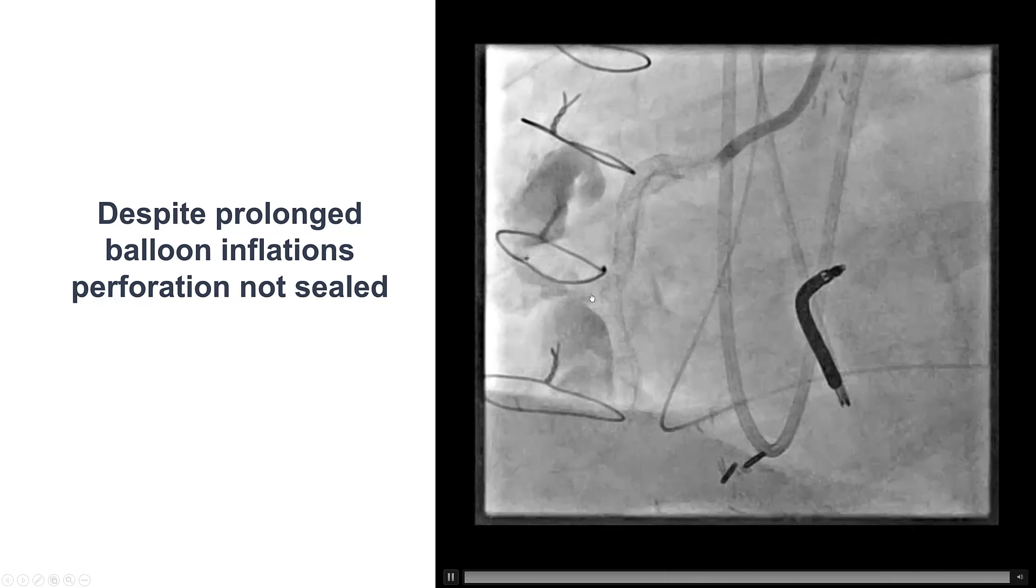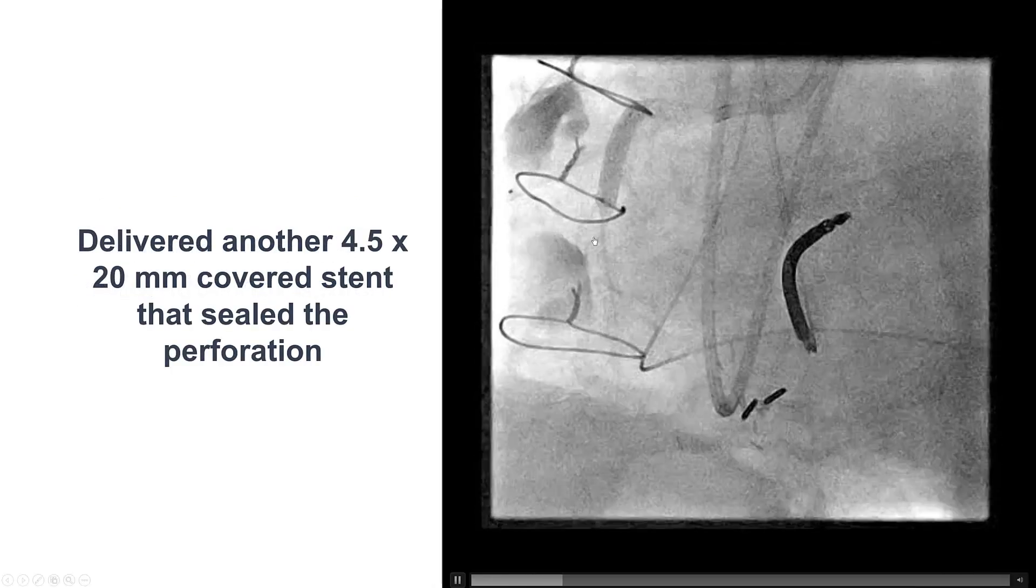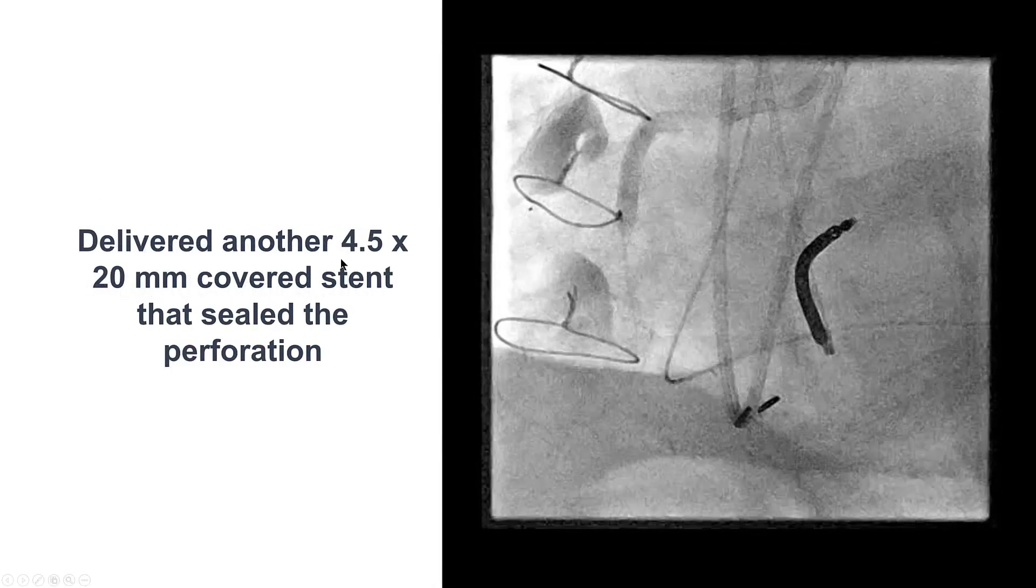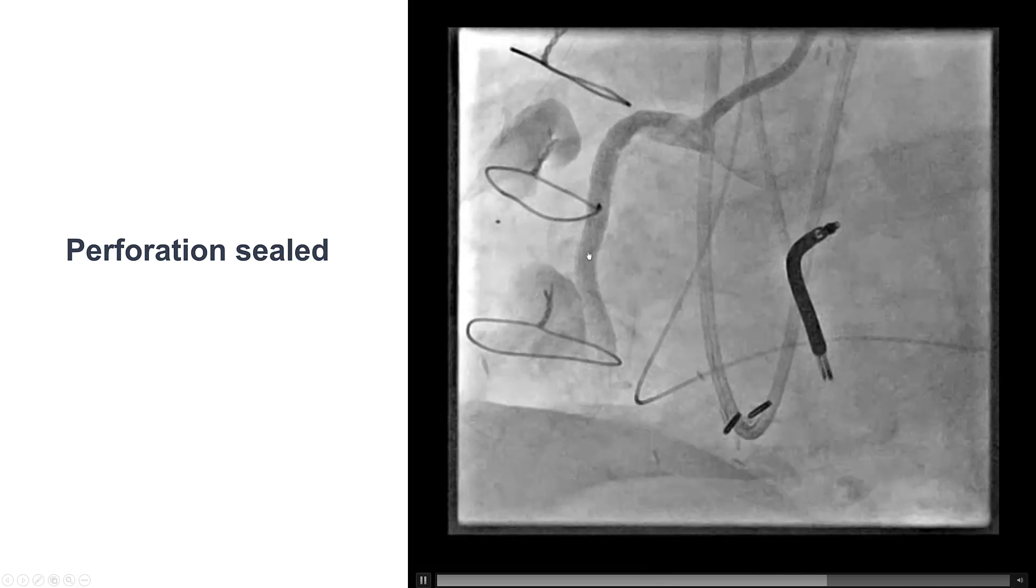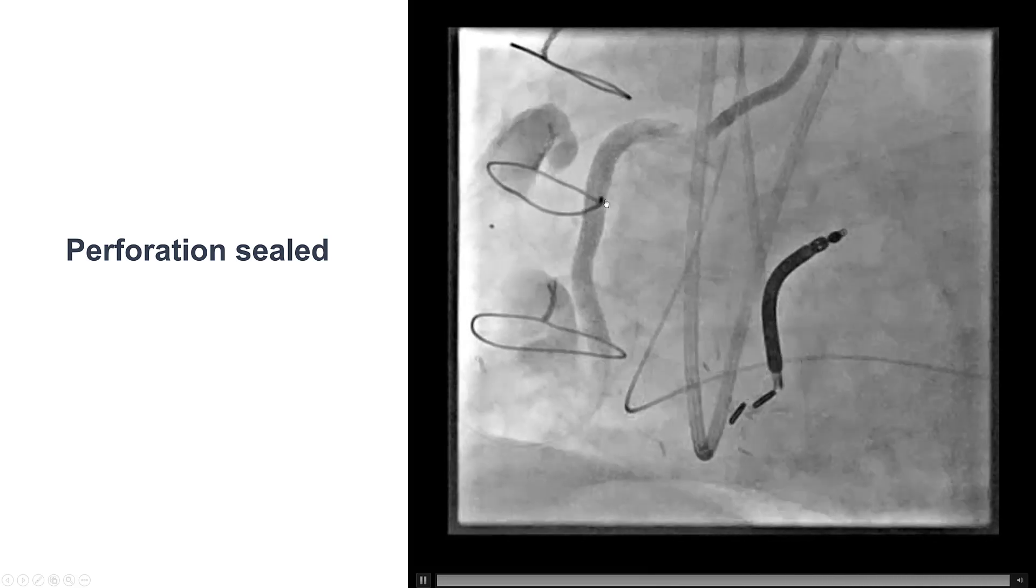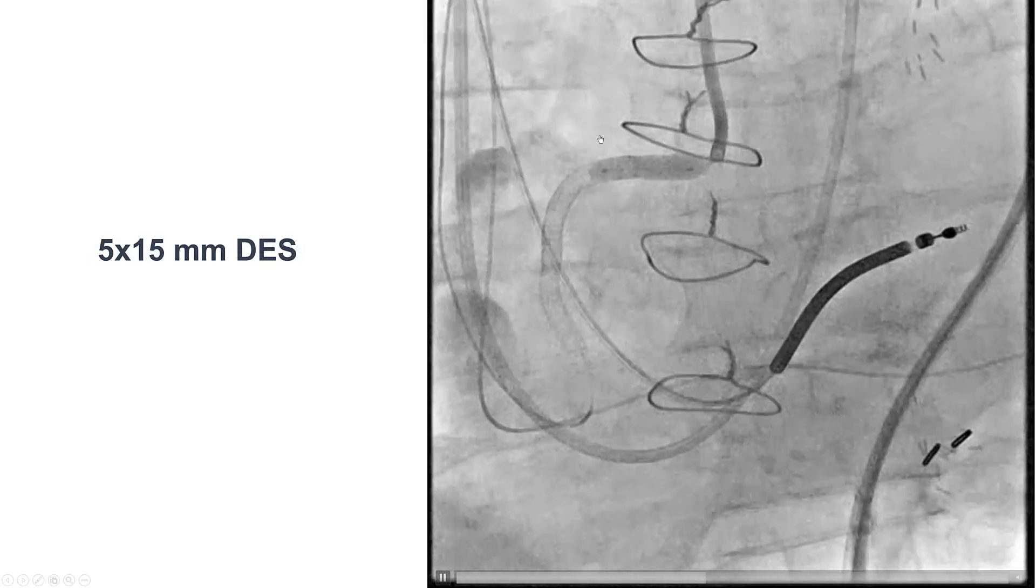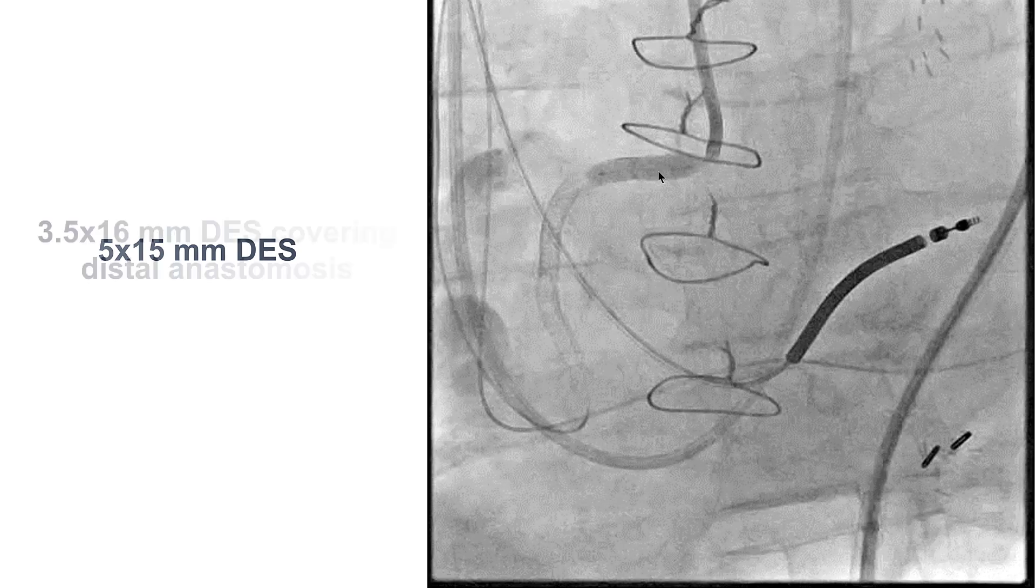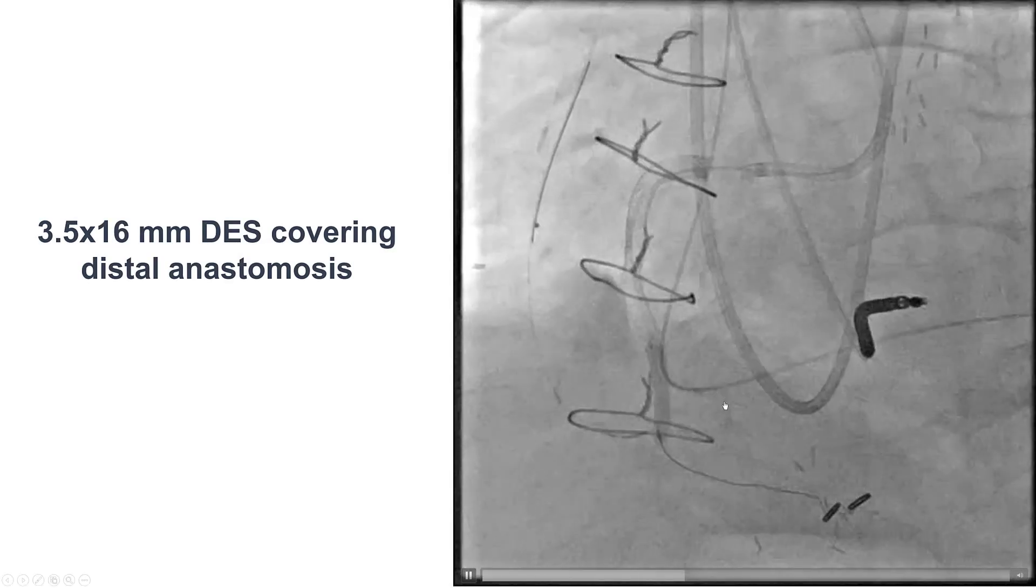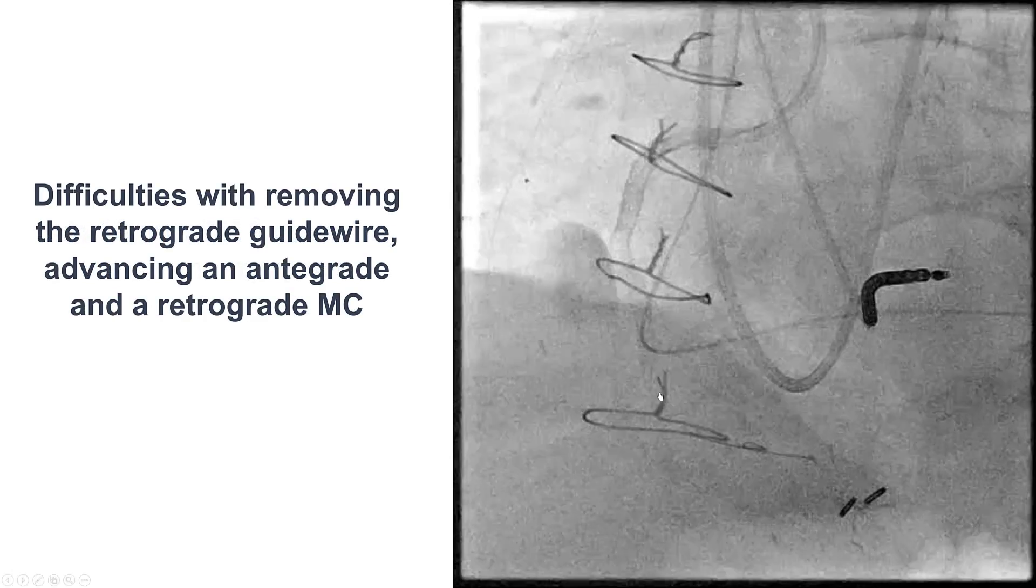Unfortunately, we still had bleeding through the coronary artery, and we ended up using another covered stent, 4.5 by 20 millimeters, that eventually achieved hemostasis, sealed the perforation. The patient did remain hemodynamically stable through this, and then we finally finished by placing an additional drug-eluting stent to the proximal right coronary artery. There was some disease distally, so we placed another drug-eluting stent distally.